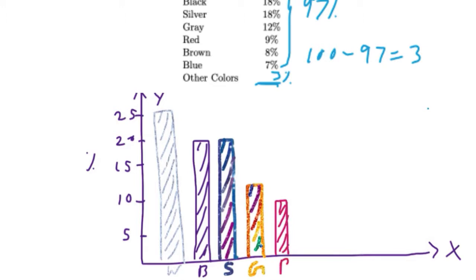Next, red - 9 percent. Then brown, 8 percent. Then blue, 7 percent, a little less than brown. Then other colors, we have 3 percent, so draw the bar like this. This is the bar graph for our data set.